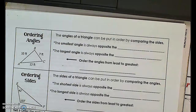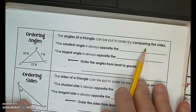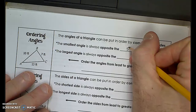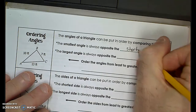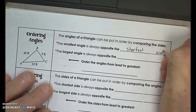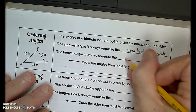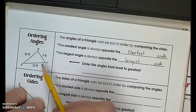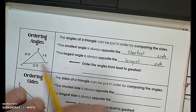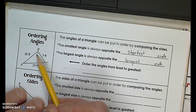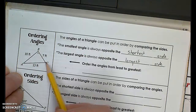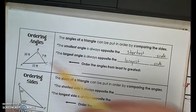We're going to talk about ordering angles and ordering sides. The angles of a triangle can be put in order by comparing the sides. The largest angle is always opposite the longest side. That's pretty logical — if I have the longest side over here, this angle is going to be the largest angle because it has to open up wide enough to allow for that length of side.